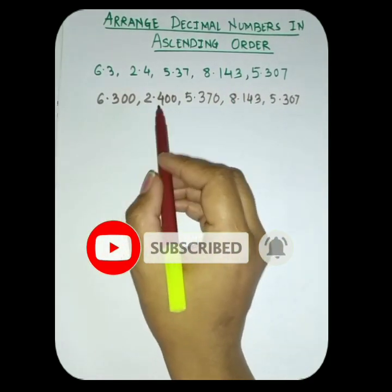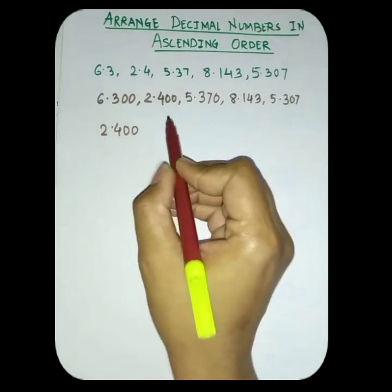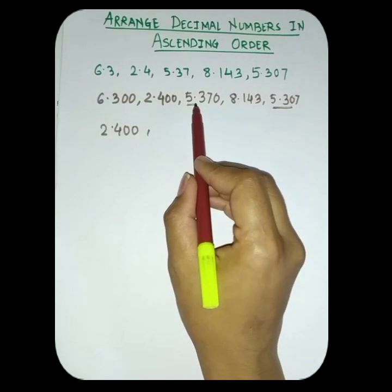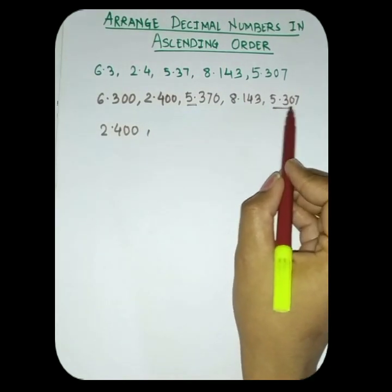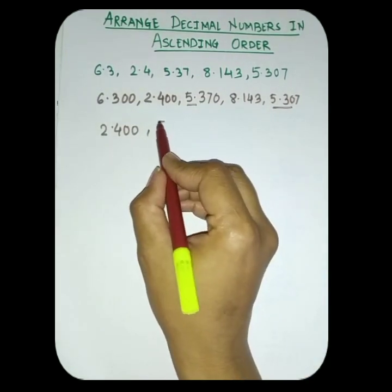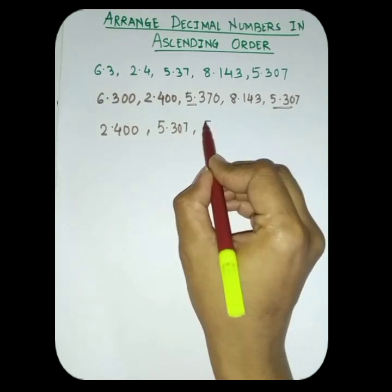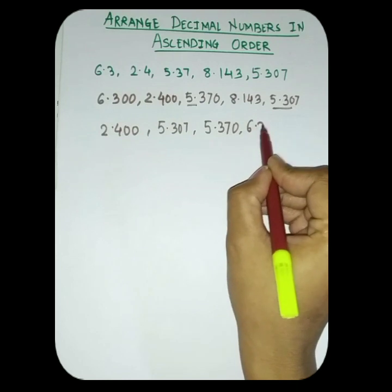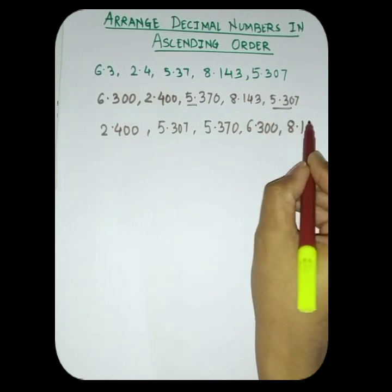Now we can check which is the smallest one, 2.400, so we will write 2.400 first. Then next, if you see, there are two fives, this and this. But this is 5.370 and this is 5.307. So which will come first? 5.307, then 5.370, then 6.300 and the last would be 8.143.